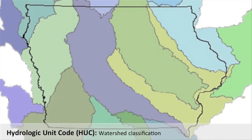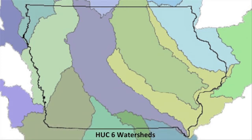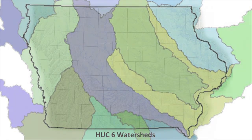The Hydrologic Unit Code, or HUC, is used to classify watersheds by the size of their drainage area. As the HUC number increases, the size of the watershed decreases.